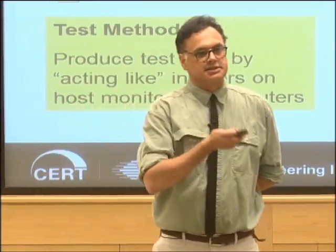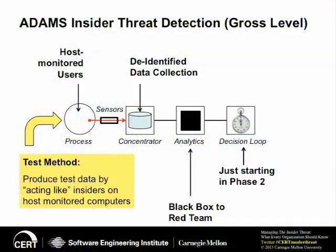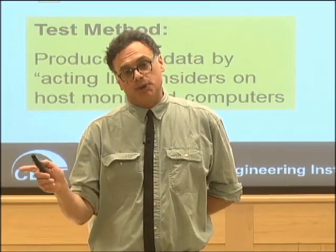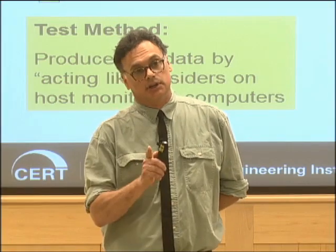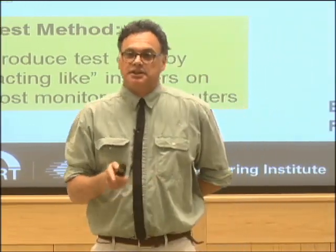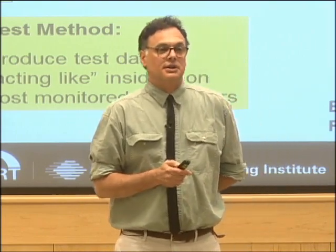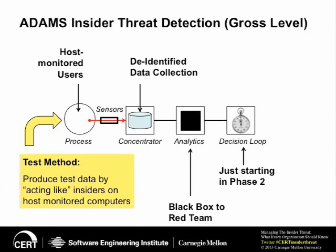Now let me put the ADAMS program back in the context of this control loop. The first phase of work has wound up this past July and we're now beginning phase two. In phase one, we don't really see the process directly. We have users who are behaving in some way and their actions are being monitored by host-monitor sensors — recording what actions users perform, what tools they're launching, what mail messages they're sending, what IM messages, what websites they're visiting, who's sending them mail, and those kinds of things.